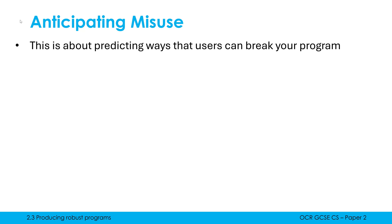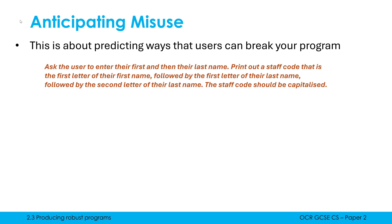All of you would have come across examples of where you write some code, you type in something a little bit different to what the program is expecting, and it crashes. So we are thinking about what could go wrong when we've got user inputs. To look at an example, let's say the question is: we're going to ask the user to enter their first and then their last name.